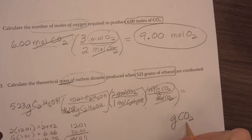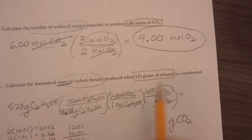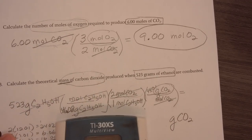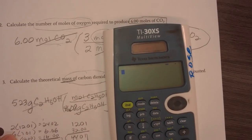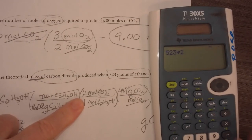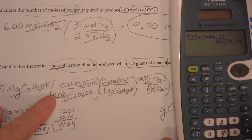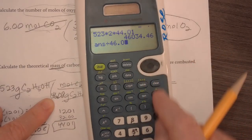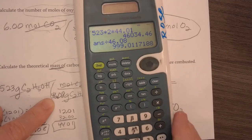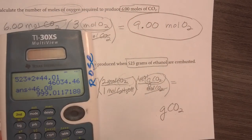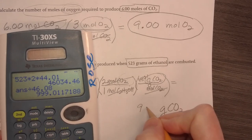And again, don't just say grams. You have to say grams of CO2 because we started with grams of ethanol. When I take my calculator and I multiply 523 times 2 times 44.01. Now I'm going to divide that by 46.01. Sorry, I said that wrong. 08. I get 999.0117. Now how many significant figures do I have in the problem? I have 3. So I'm going to say 999. Again, you only want 3 significant figures.